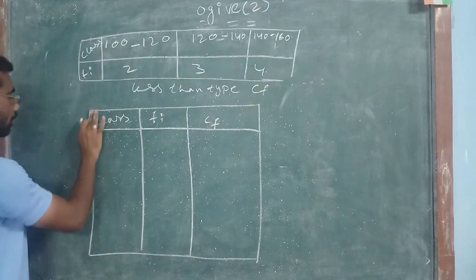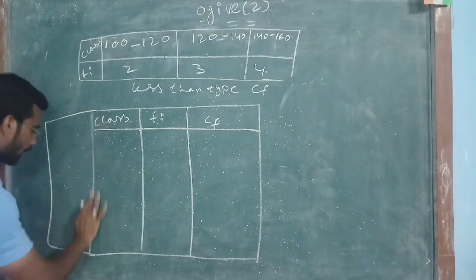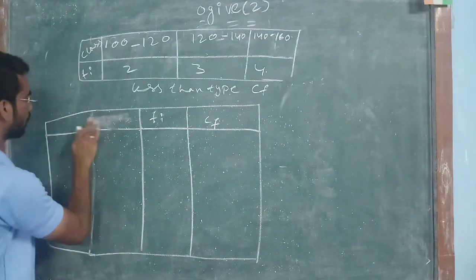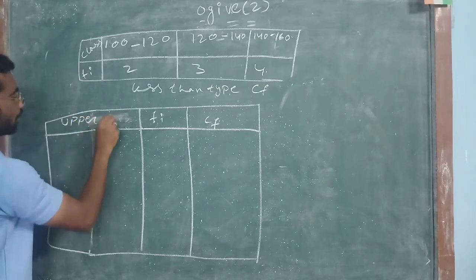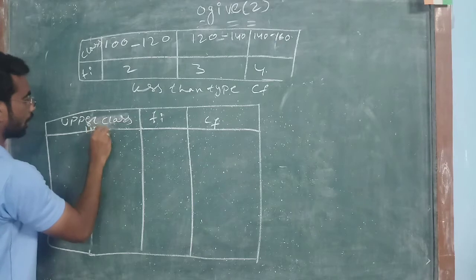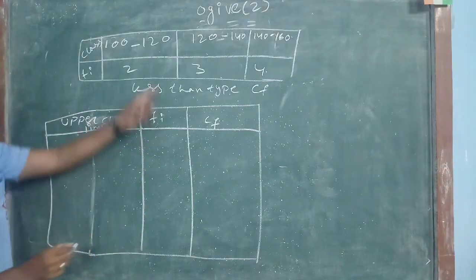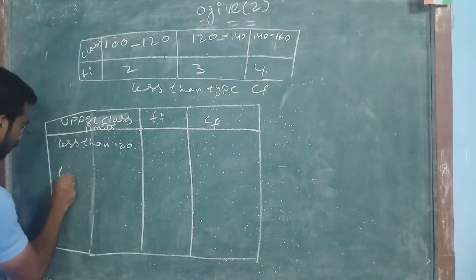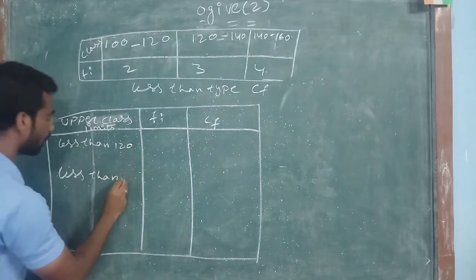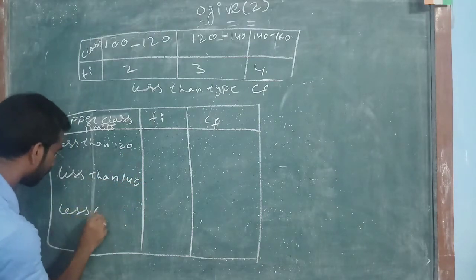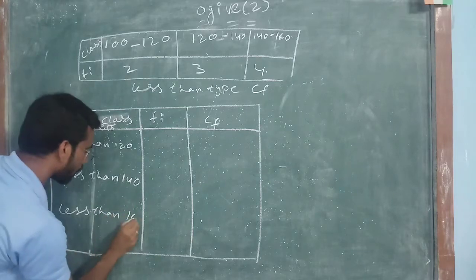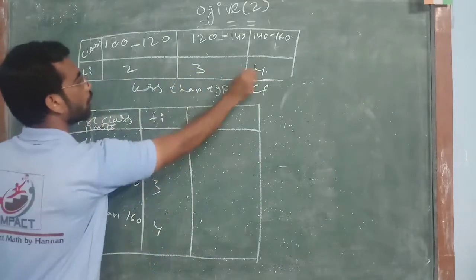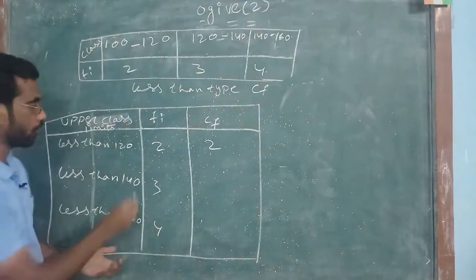FI, in this which type are you taking? Upper class limits. What are the upper class limits here? Less than 120, less than 140, less than 160 and frequency 2, 3 and 4. Now, 2 we should write as it is, first it will be as it is.